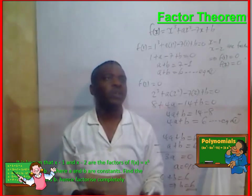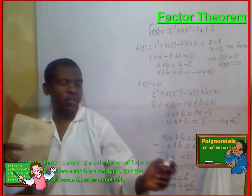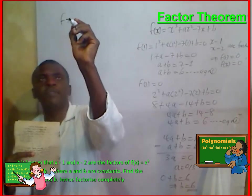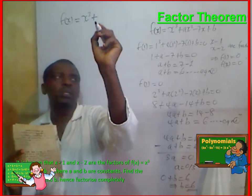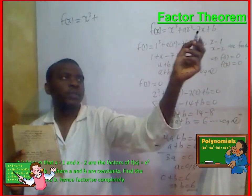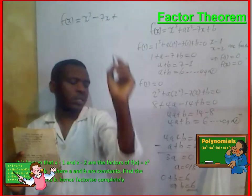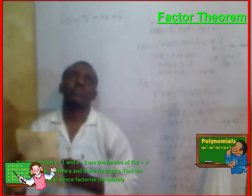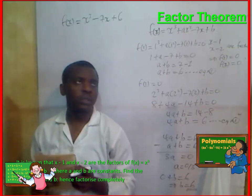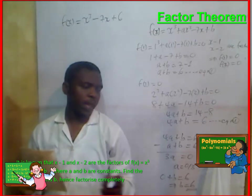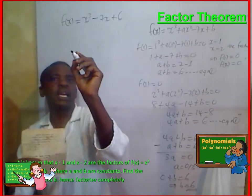So, I now have the values of A and B. Let's rewrite our polynomial. Since A is 0, that term goes off. So f of x is equal to x cubed minus 7x plus 6. Now, we are asked to also factorize this polynomial. We know that x minus 1 is a factor, so we can divide this polynomial by x minus 1.